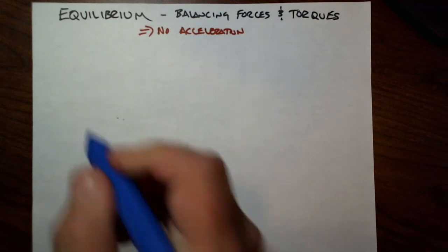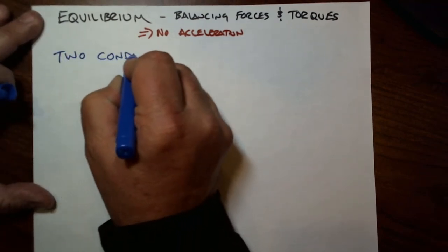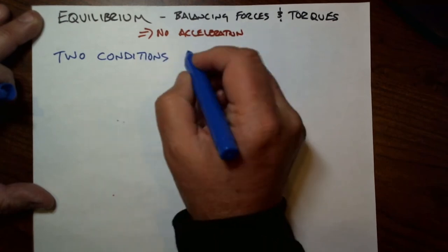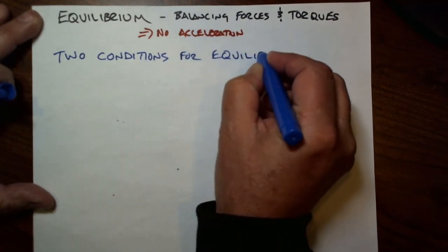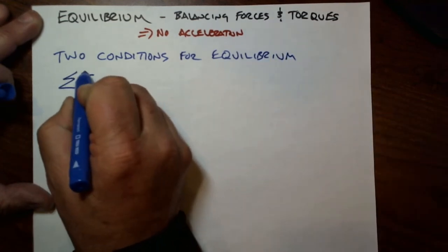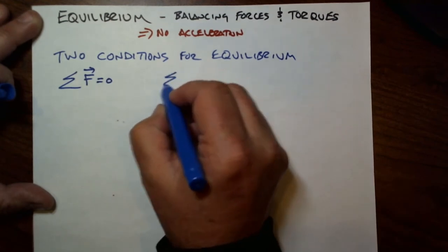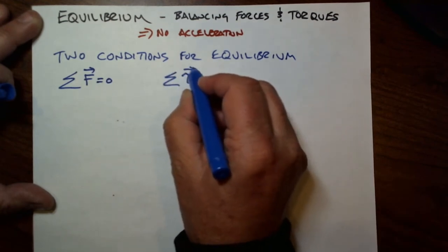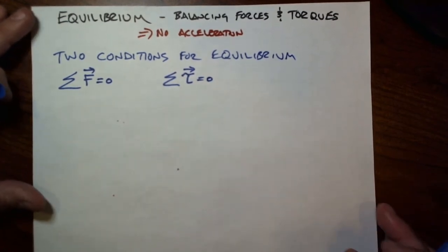So the conditions for equilibrium: there are two conditions for equilibrium. Condition number one is the sum of all the vector forces must be zero. And the second condition is the sum of all the vector torques must be zero. And that gives you two equations, and you can solve for up to two unknowns.